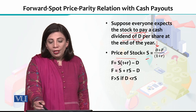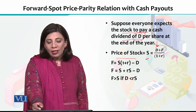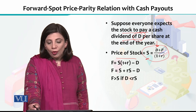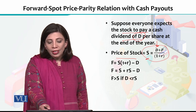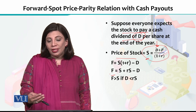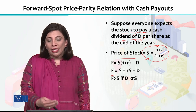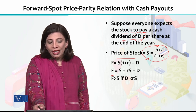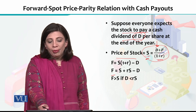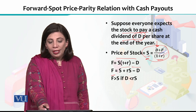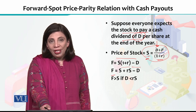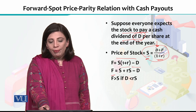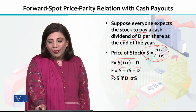If we solve this equation for capital F, and multiply through by capital S — the spot price — by 1 plus R, and take D to the other side, then you will have a minus D. So the result is: F equals S multiplied by 1 plus R, minus D.